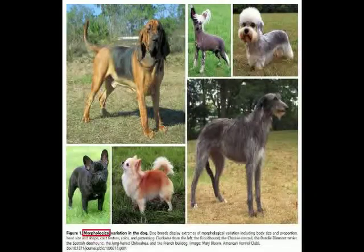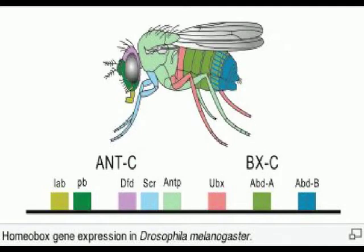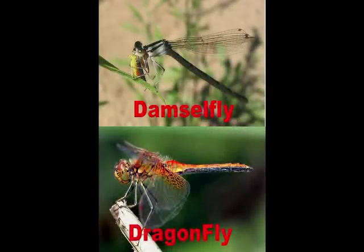Nephilim Free made the mistake of pointing to homeobox genes, claiming that these genes cannot be permanently changed and that's why morphological change is impossible. This is really the only basis to his argument that morphological changes are impossible. If I can show this claim to be wrong, then his argument fails.